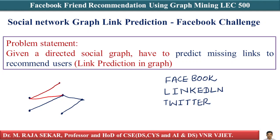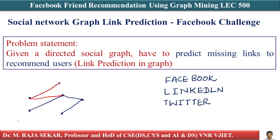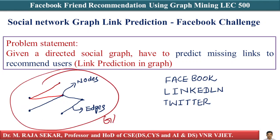This person and this person are friends. If you represent each user of a social network with a dot and connect people who are either friends or followers using something called edges, this whole structure is called a graph in computer science or applied mathematics.